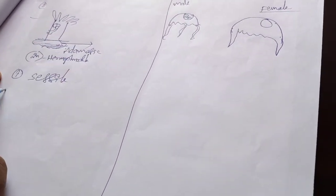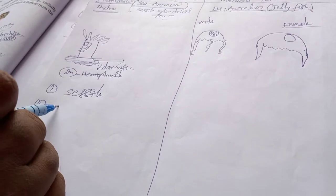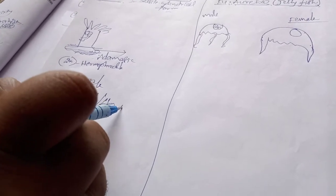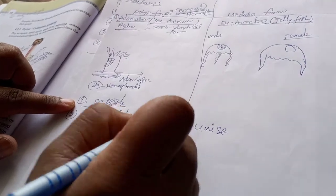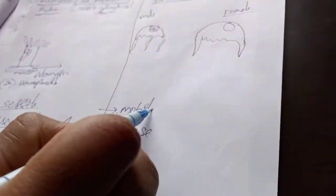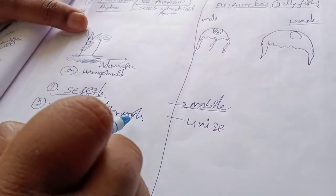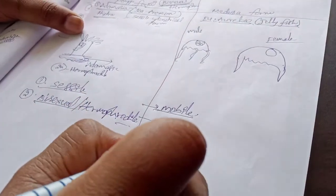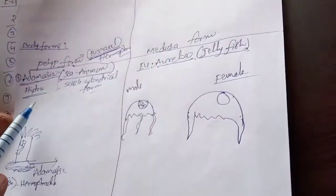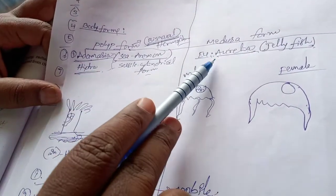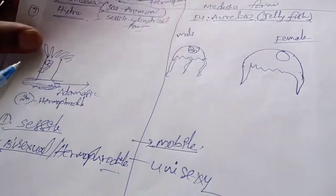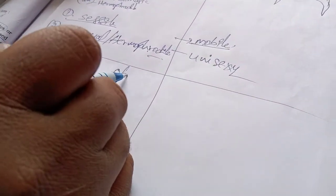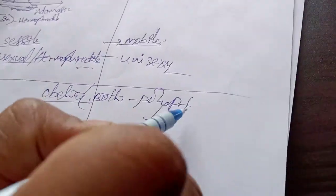Medusa is movable. Polyps are mostly bisexual or hermaphrodite, while medusa is unisexual. Medusa example is Aurelia. Both polyp and medusa will sometimes be produced together — that example is Obelia.